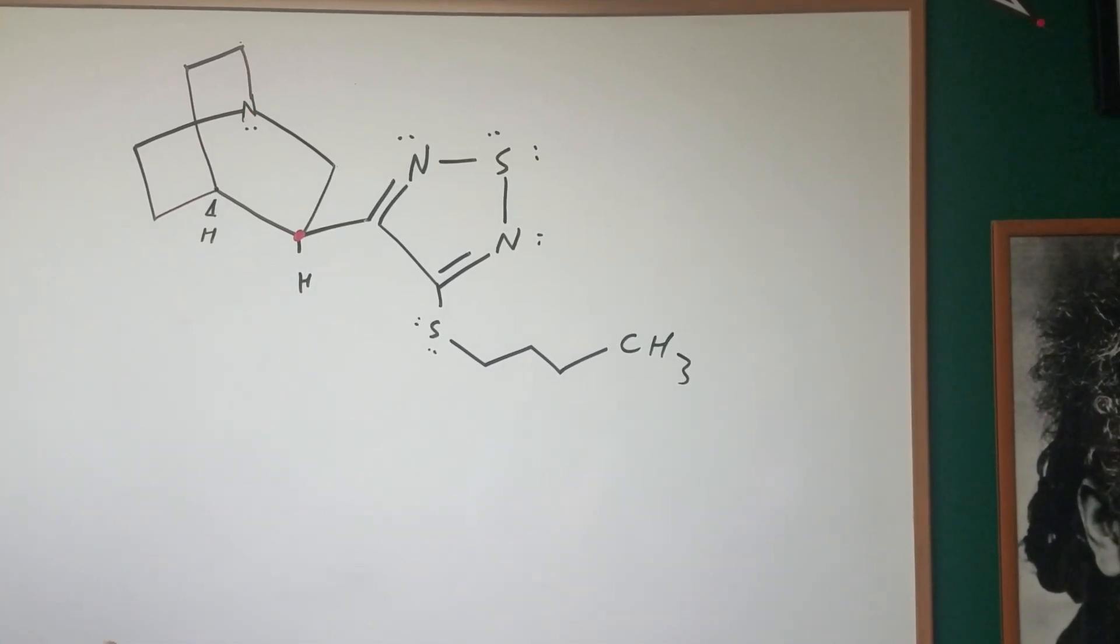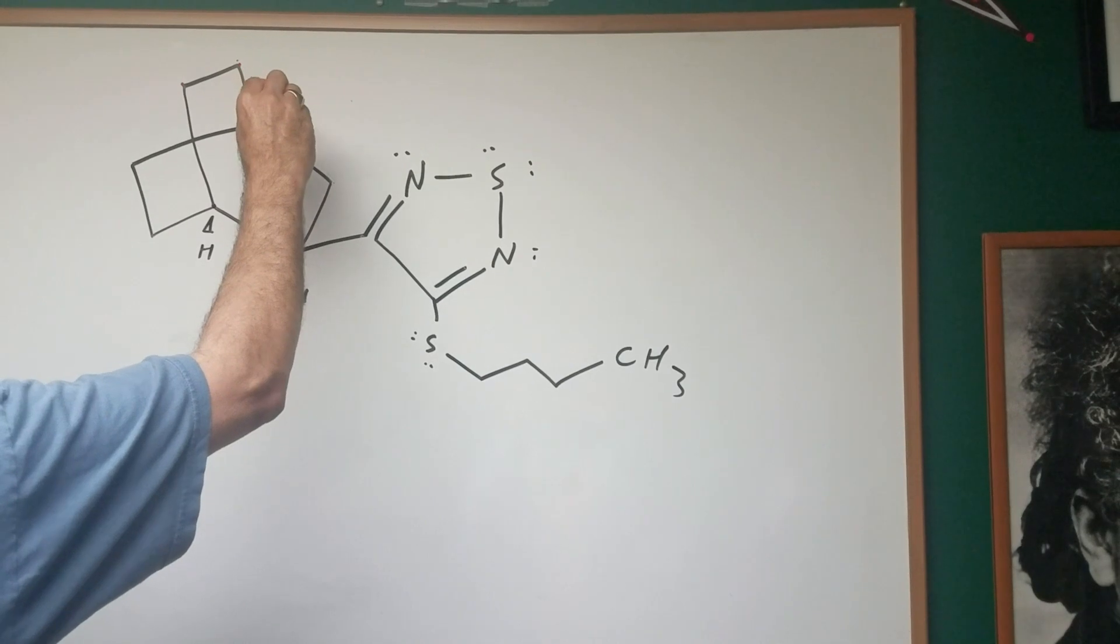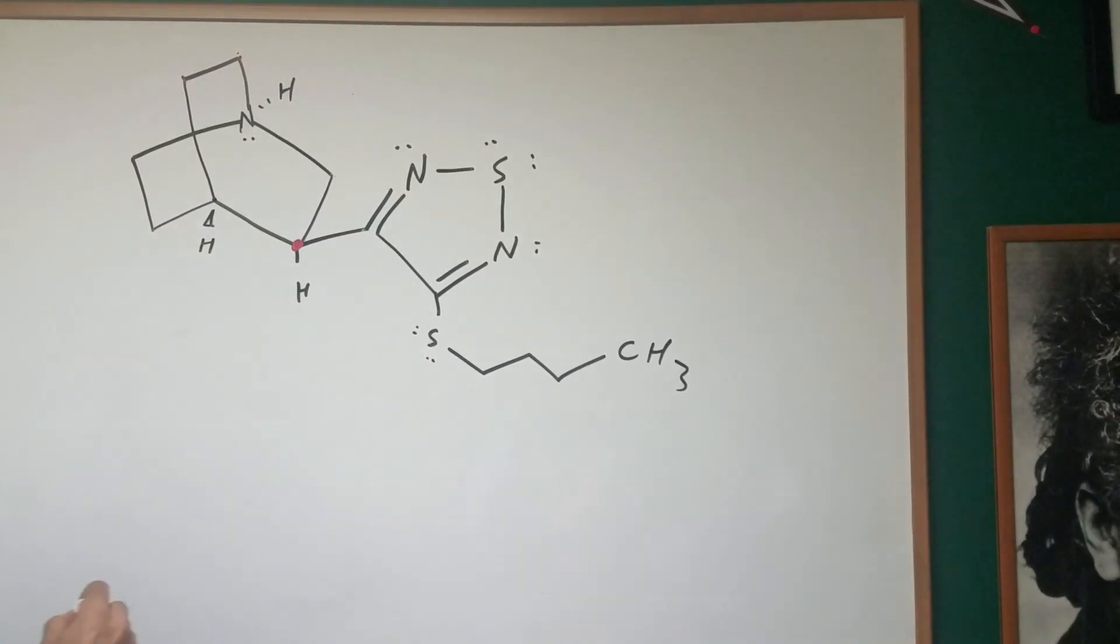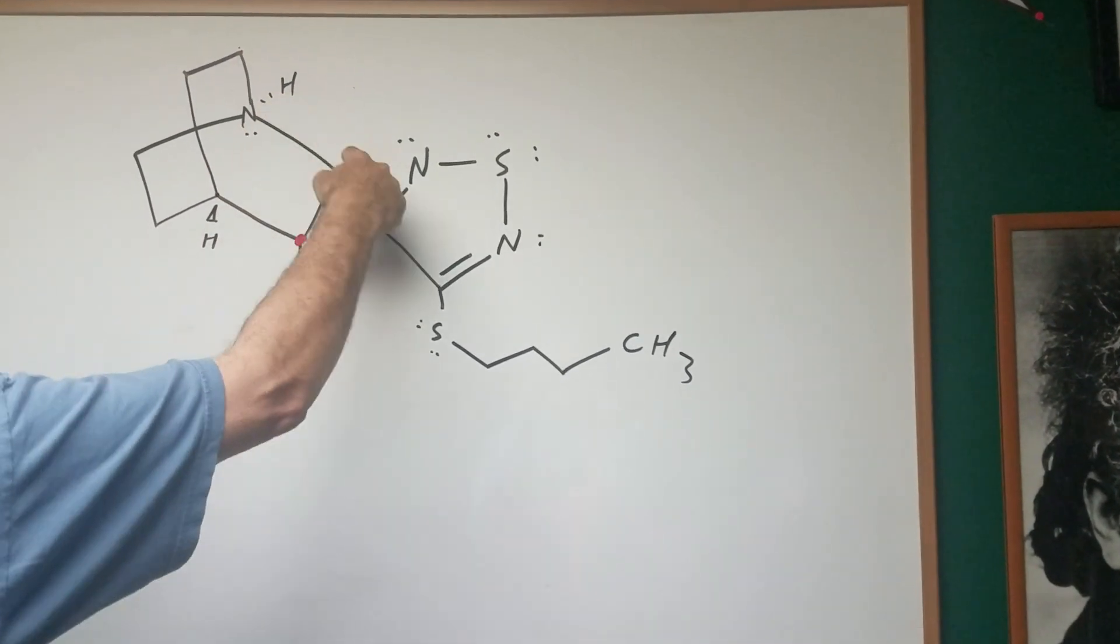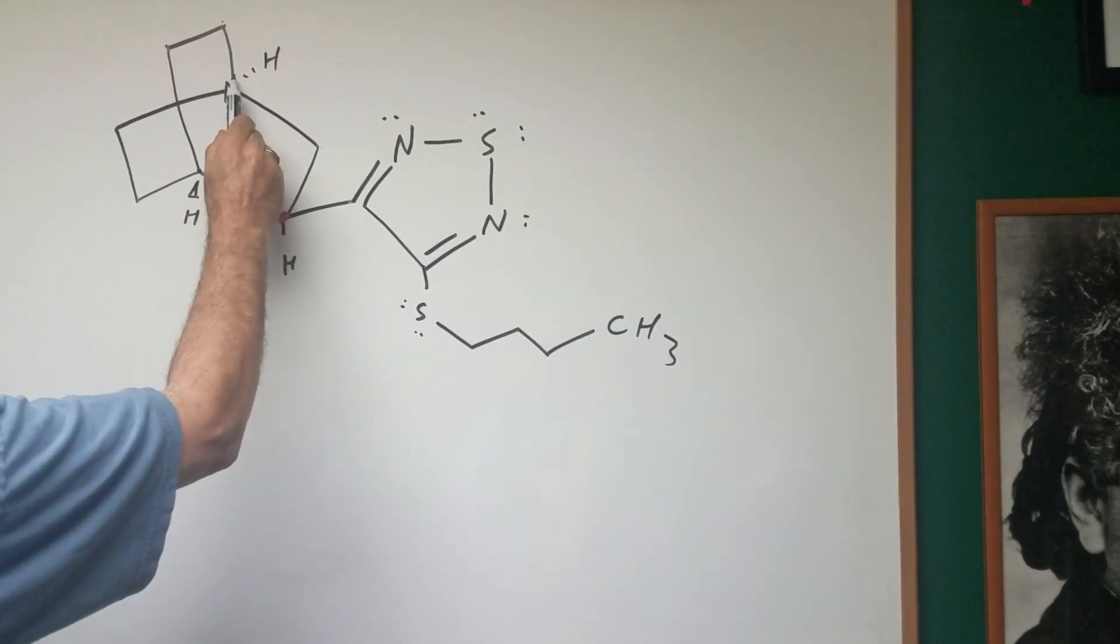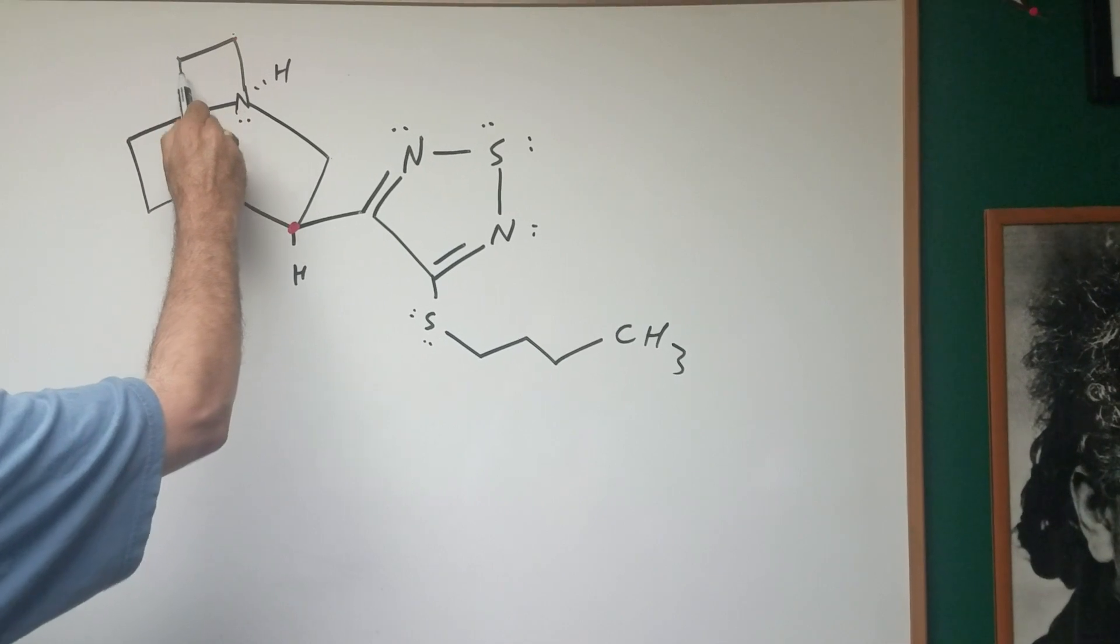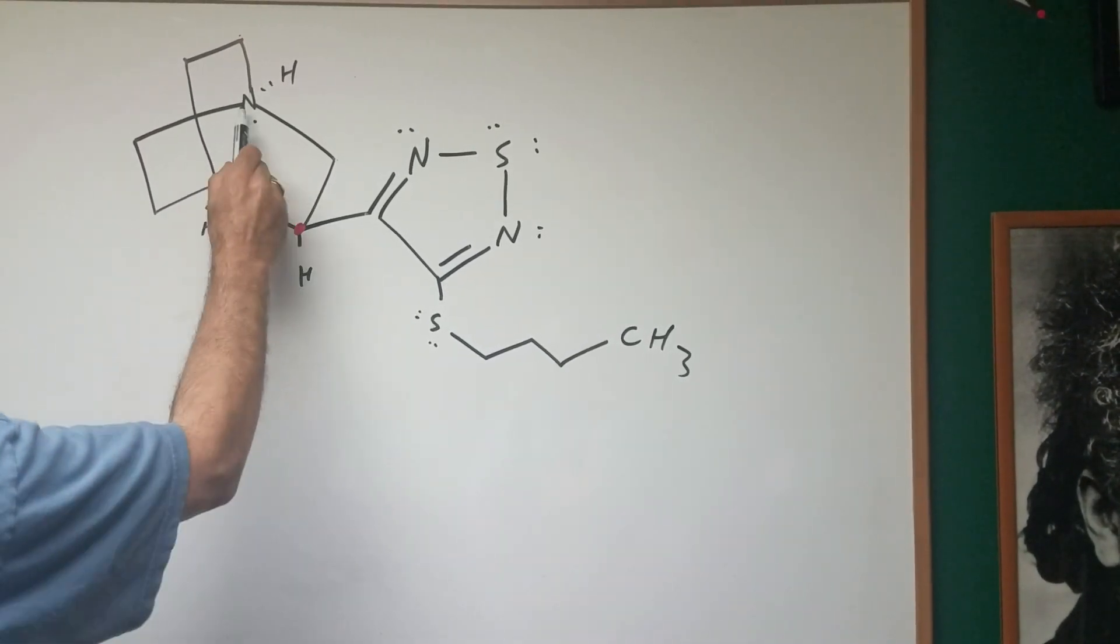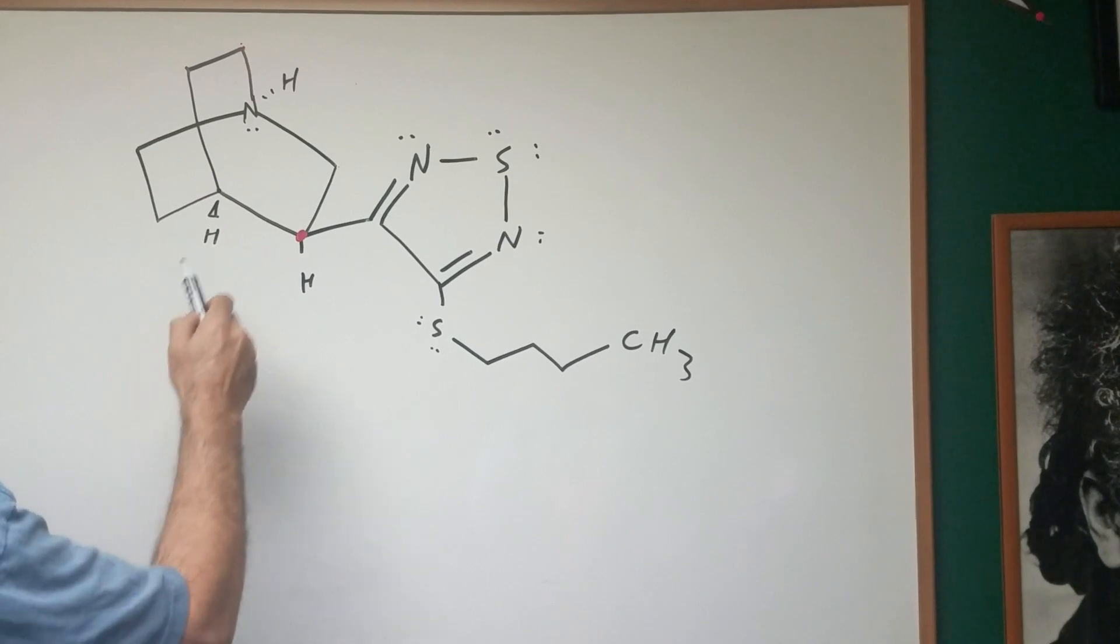How about a chiral nitrogen? Well, we already know that there's a hydrogen going in the back, so that's one group. If you go this way, that's a path, so that counts as two. But if you go up, one, two, and then we go to the bridgehead. If you go this way, one, two, bridgehead. That means they're the same, so that is not chiral.